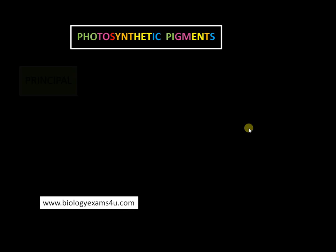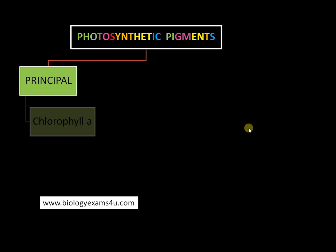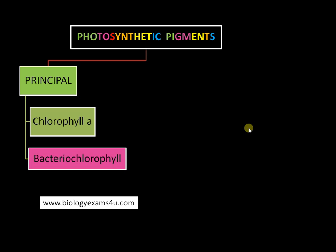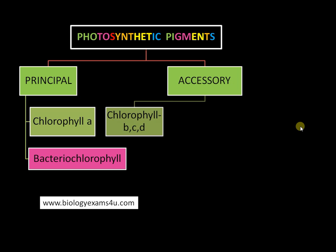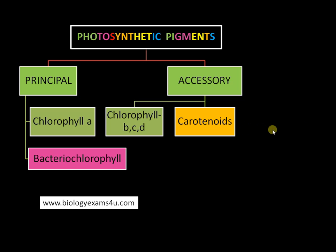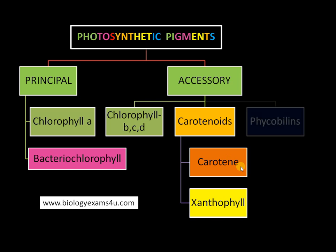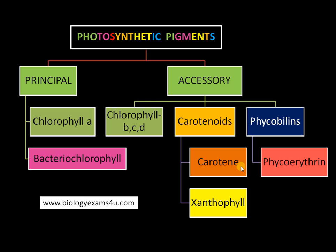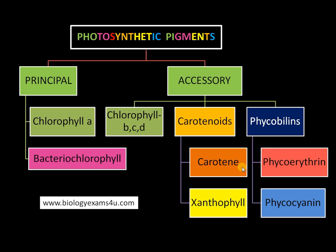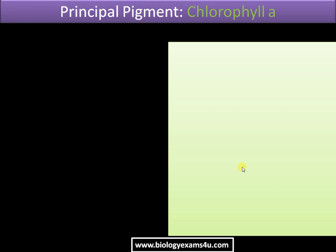Moving into the details of different types of photosynthetic pigments: the principal pigments include chlorophyll a, present in all plants, and bacterial chlorophyll, present in bacteria. Accessory pigments include chlorophyll B, C, D, etc., and carotenoids — somewhat yellow or orange-red in color — which include carotene and xanthophyll. The third class is the phycobilins, which include phycoerythrin and phycocyanin.